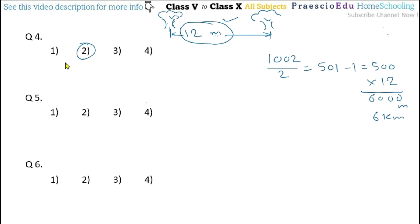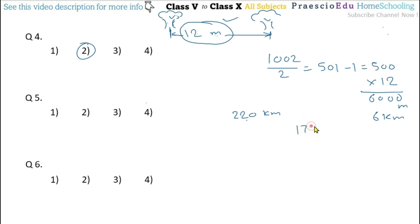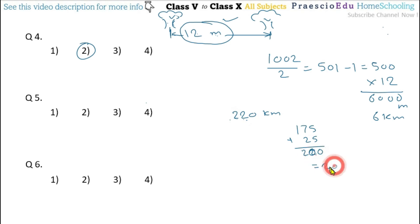Question number 5: Sam travels 25 kilometer on bicycle, 220 kilometer by train, and 175 kilometer by bus. The train covers 220 kilometer. Bicycle plus bus equals 25 plus 175 equals 200 kilometer. The difference between train distance and the combined bicycle and bus distance is 220 minus 200 equals 20 kilometer. This is mentioned in option number 1.